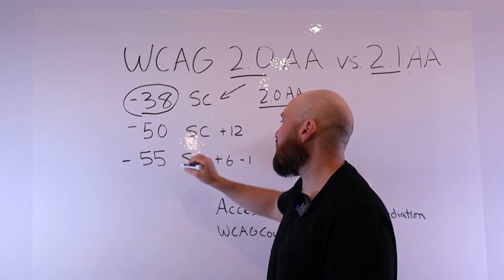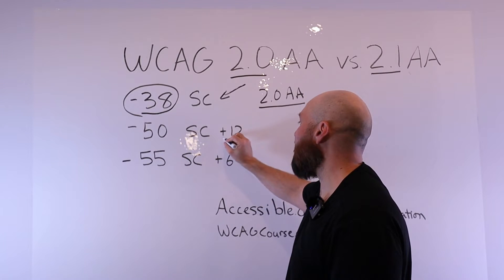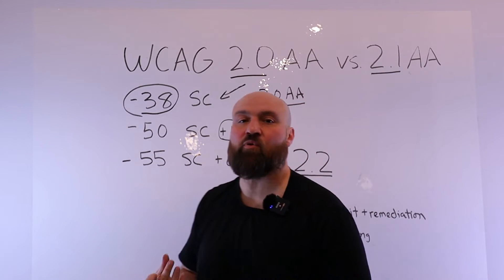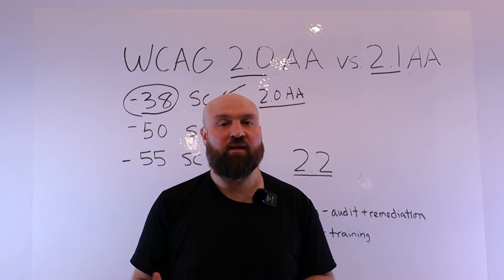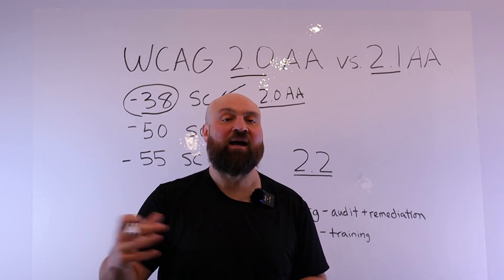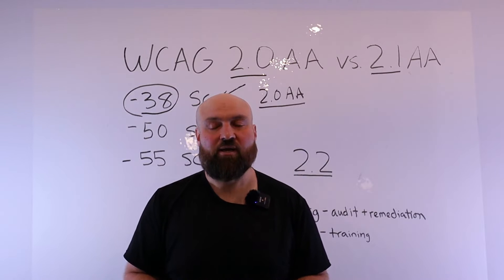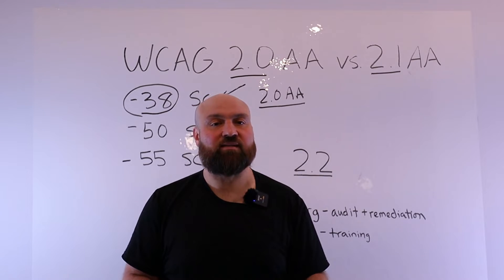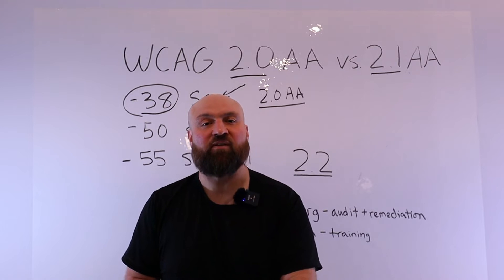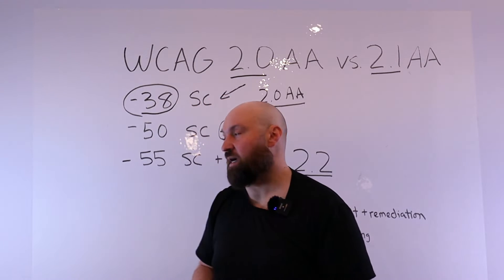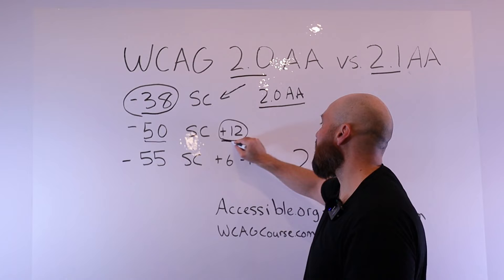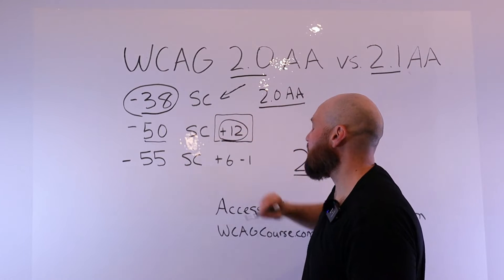When it comes to version 2.1, what happened is we added 12 additional success criteria. This is really important: nothing has been undone in the previous version. All that has happened is we've added additional success criteria. We didn't change the wording, nothing else happened — we've just added to the previous version of the web content accessibility guidelines. So with version 2.1, we have 12 additional success criteria.